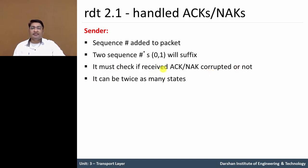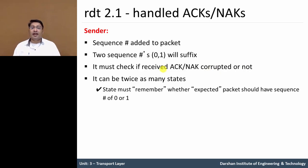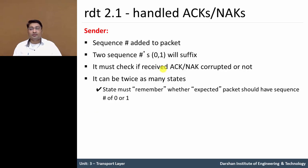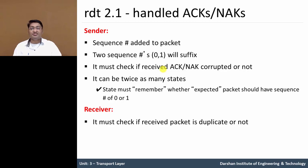There can be twice as many states, because if the sender received the acknowledgement packet properly, the receiver cannot know whether that acknowledgement was properly received at the sender or not. The receiver doesn't know if the acknowledgement packet was properly received at the sending side. To solve this problem we need to add a sequence number with the packet, so that at the receiving side the receiver can check if the received packet is a duplicate or not.